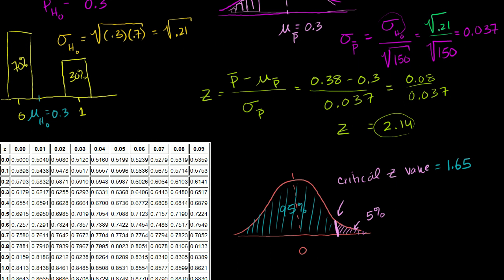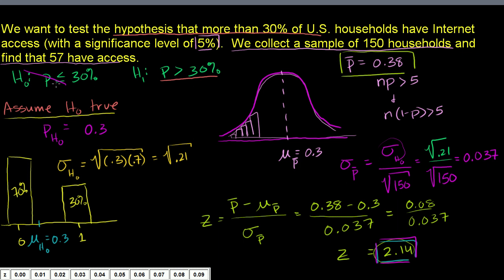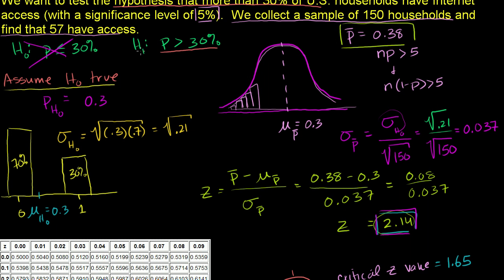Our z-statistic for the actual sample is 2.14, which is way out beyond the critical z-value of 1.65. So the probability of getting that result was definitely less than 5%. We could also find the exact p-value using a z-table. The whole exercise was to determine whether to reject the null hypothesis at a 5% significance level — and we can. This is a more extreme result than our critical z-value, so we reject the null hypothesis in favor of our alternative.